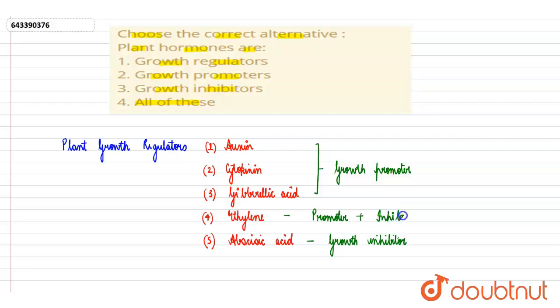In this particular portion, we have exactly seen that all the five different kinds of plant growth regulator, which is auxin, cytokinin, gibberellic acid, ethylene, and abscisic acid. The above three are growth promoters.